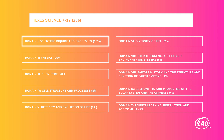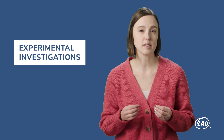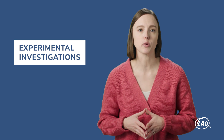Let's start with domain one, scientific inquiry and processes. This domain is about scientific history and concepts, as well as ensuring the safety of all students and the correct use and care of organisms, natural resources, materials, equipment, and technologies. Three competencies are covered here. Scientists carry out experimental investigations in controlled conditions, such as in laboratories.